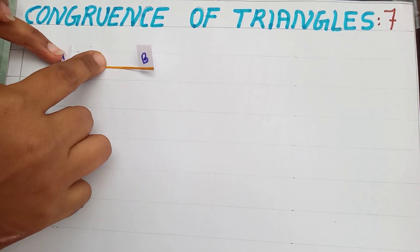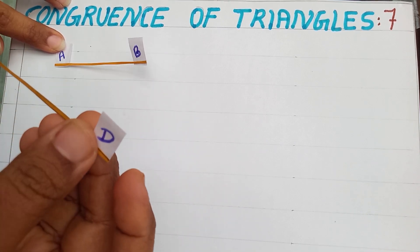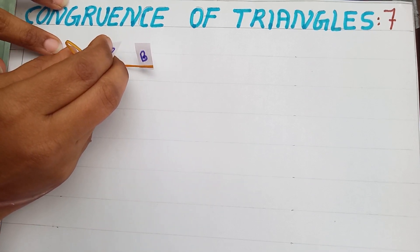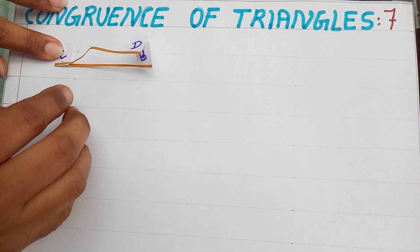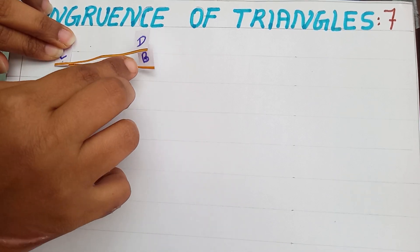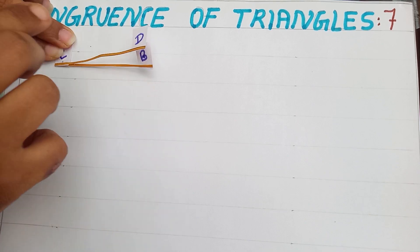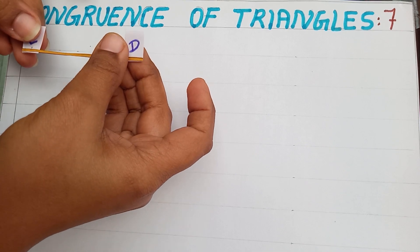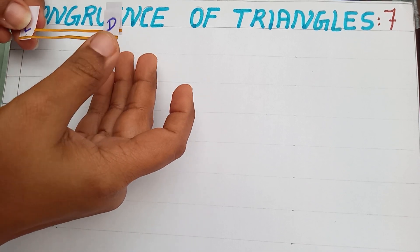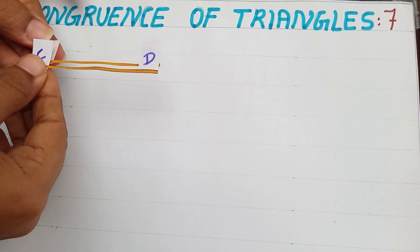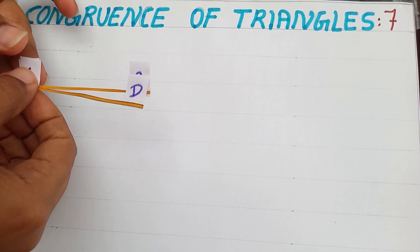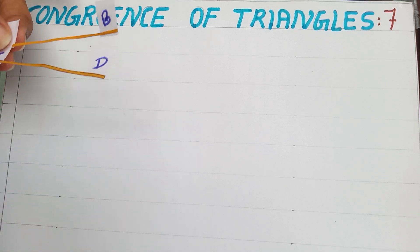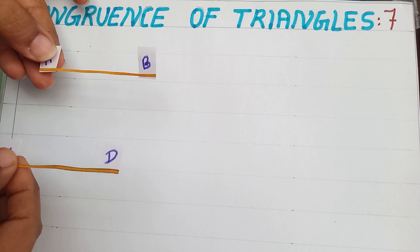That means, on point A, I have to keep point C exactly. And I am going to check, does point B match with point D. These two line segments are equal. If you keep one line segment over the other and it covers exactly, we can say that these two line segments are congruent.